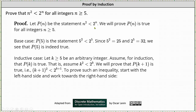We will prove P of n is true for all integers n greater than or equal to 5. We first consider the base case, which is P of 5. P of 5 is the statement 5 squared is less than 2 to the fifth. Since 5 squared equals 25 and 2 to the fifth equals 32, and since 25 is less than 32, P of 5 is true.